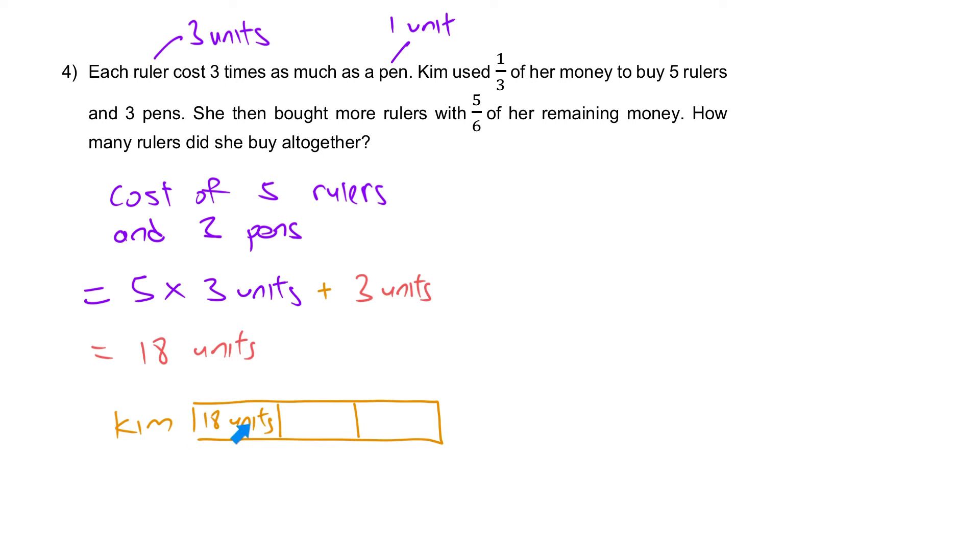Each one is 18 units because this is a third of her money. She used 18 units to buy five rulers and three pens. So 18, 18, 18.